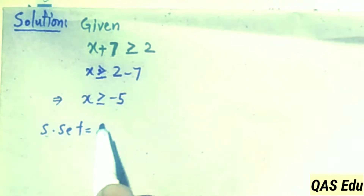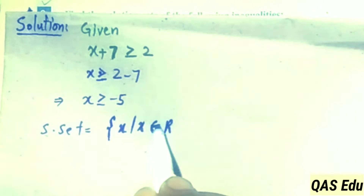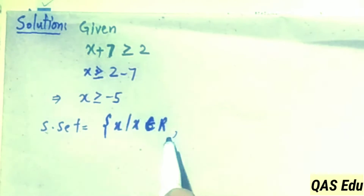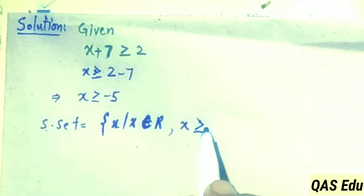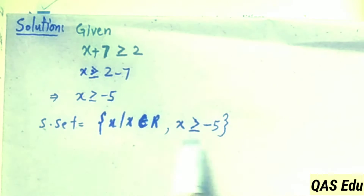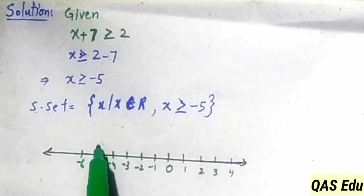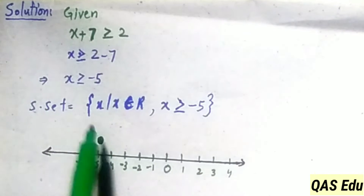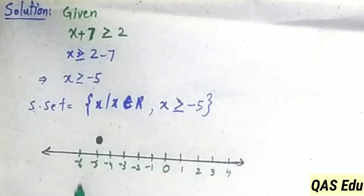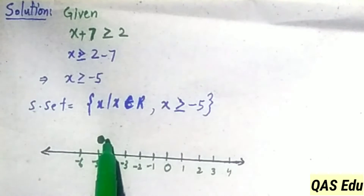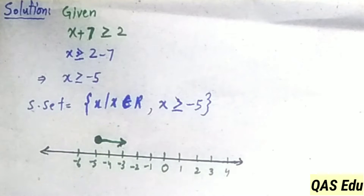The solution set is where x belongs to real numbers, with the restriction that x is greater than or equal to minus 5. On the number line, we draw a filled circle at minus 5, since x equals minus 5 is included, then draw the arrow to the right for all values greater than or equal to minus 5.